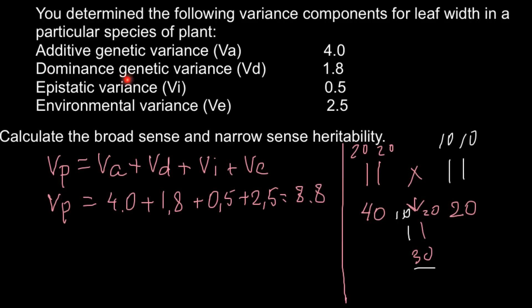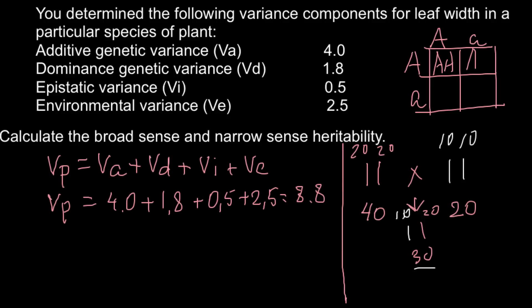What about dominance genetic variance? This is simple Mendelian genetics where one parent is heterozygous for one gene and another parent is also heterozygous. When we cross these two parents and build a Punnett square in the F1 generation, we find three different genotypes. If it is a dominance trait, those three genotypes would behave as the dominant phenotype, and one genotype would be the recessive phenotype. The heterozygous form would still phenotypically look like the homozygous dominant.